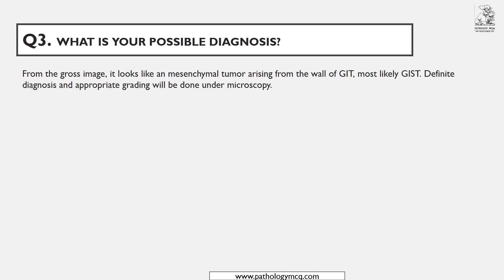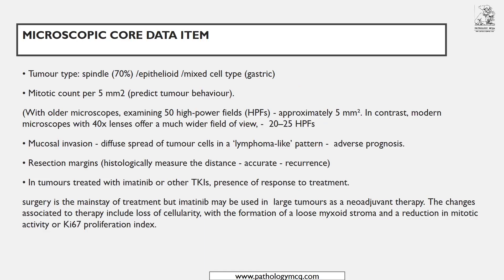For microscopic assessment, first mention the type of tumor: spindle, epithelial, or mixed type. Most GISTs will have a spindle cell type, but gastric GISTs can have epithelial and mixed cell types. In my own exam, the long case was a gastric GIST — I was about to write spindle cell only, but remembered from the datasets that it could be epithelial or mixed, so I checked carefully and found epithelial areas.